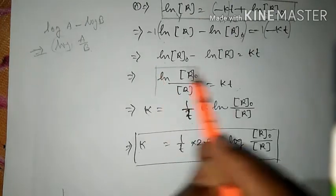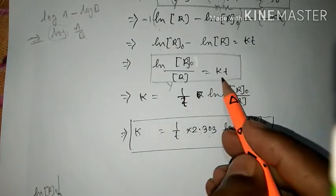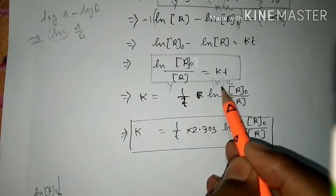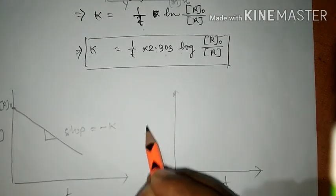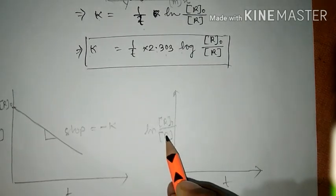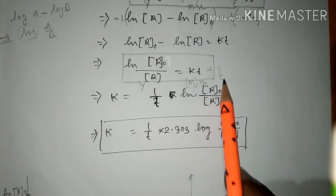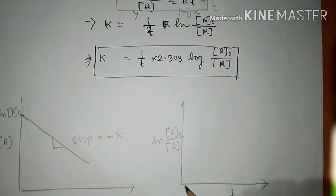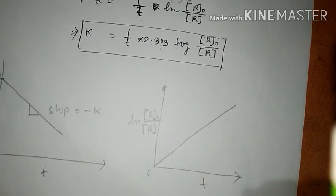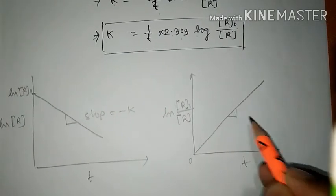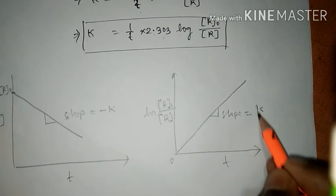Let us take another example of a graph for this equation. Here Y is ln(R₀/[R]), X is T, and the slope M is plus. There is no C term, meaning C is 0 and the intercept is 0. That's why the straight line goes through the origin. Drawing with T on the X-axis and ln(R₀/[R]) on the Y-axis, the line passes through the origin and the slope equals k.